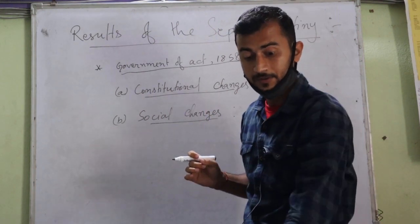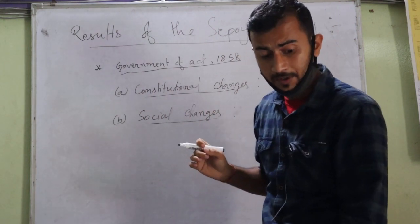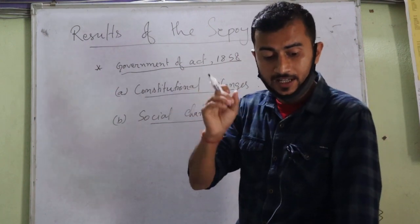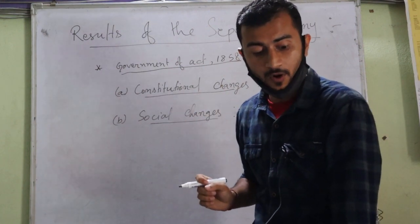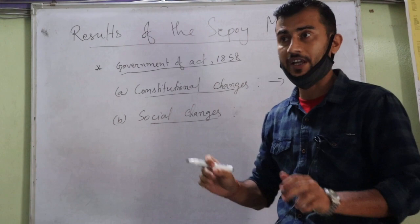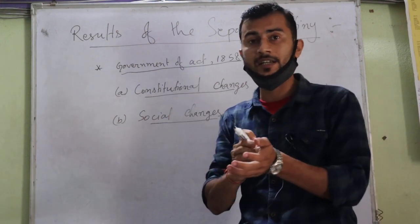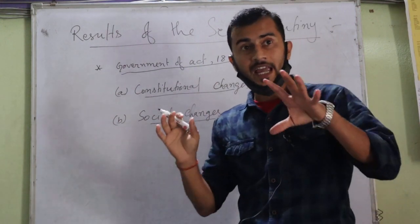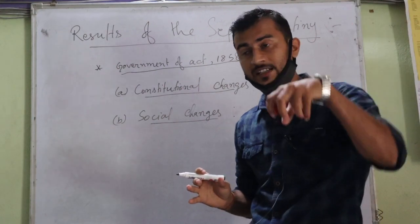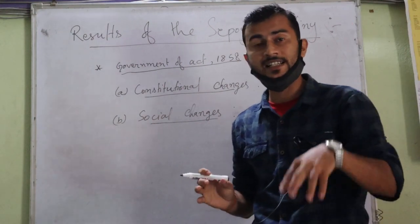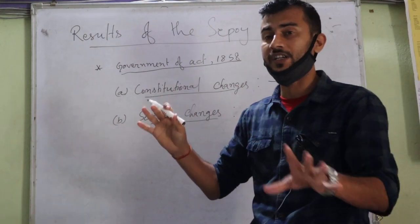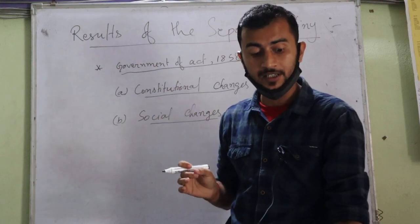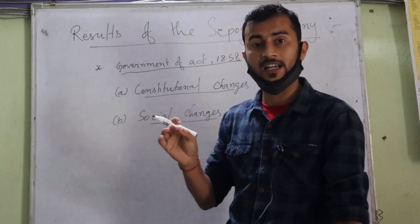Under this act, a council was formed with 15 members. There were 8 members from the British government and 7 members from the East India Company, making a total of 15 members on this council.